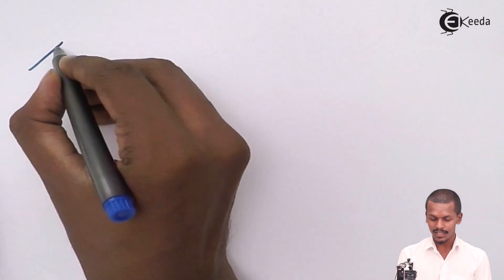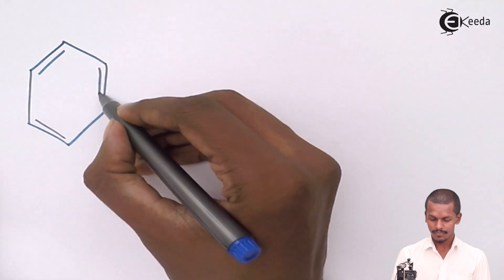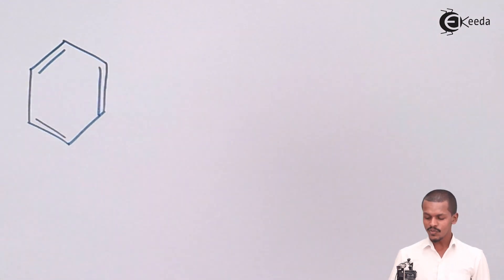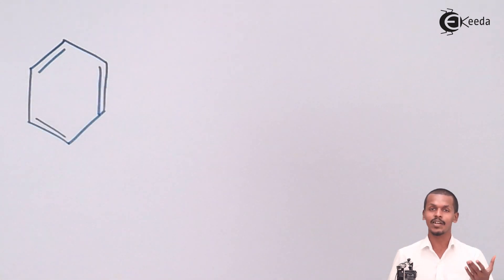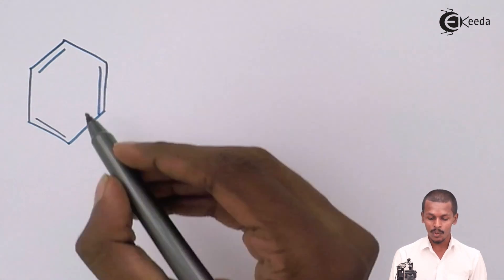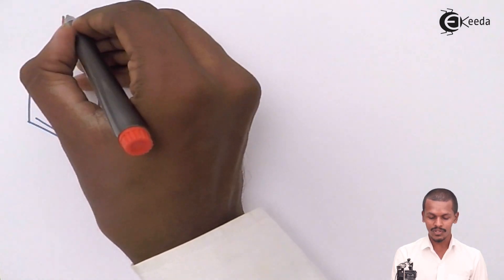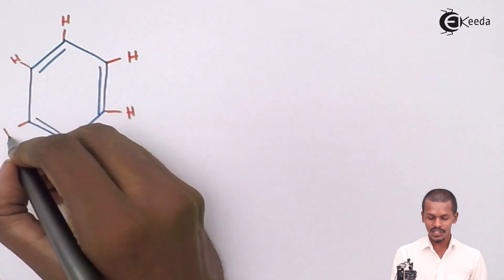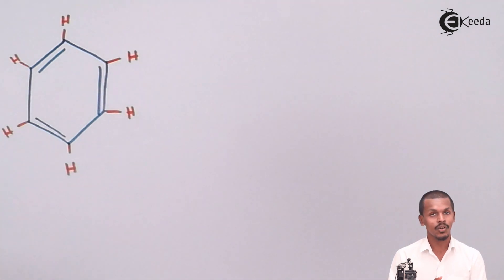Starting with the first structure: benzene can be written in this structural formula. In this case, the position of the carbon atoms remains the same — there are six carbon atoms as well as six hydrogen atoms, and nothing changes in their positions. The only thing that happens is the shifting of electrons, or the delocalization of electrons takes place.